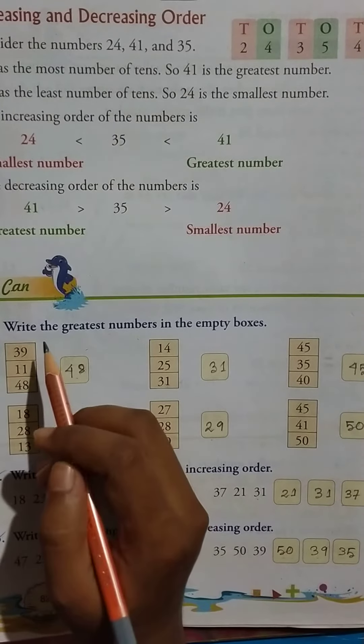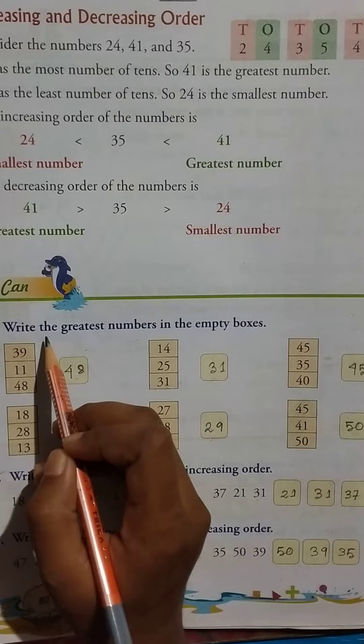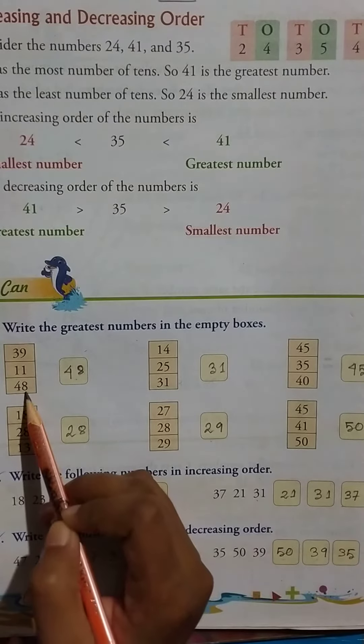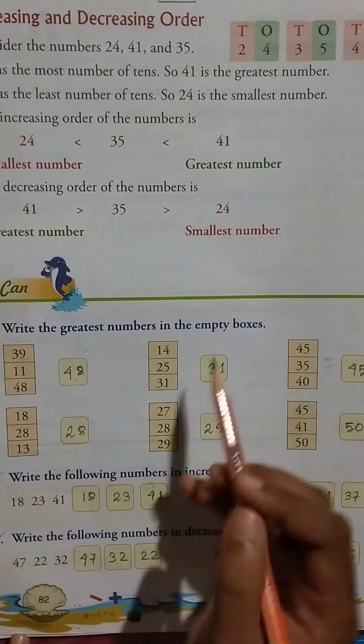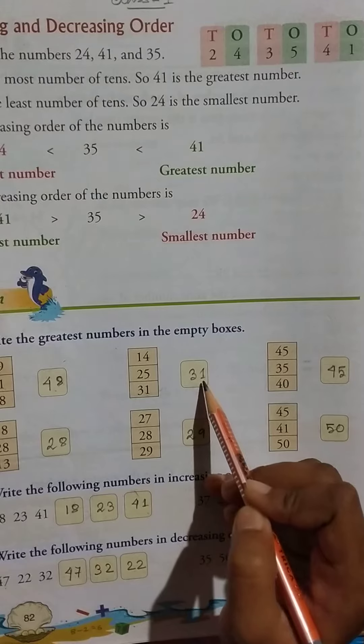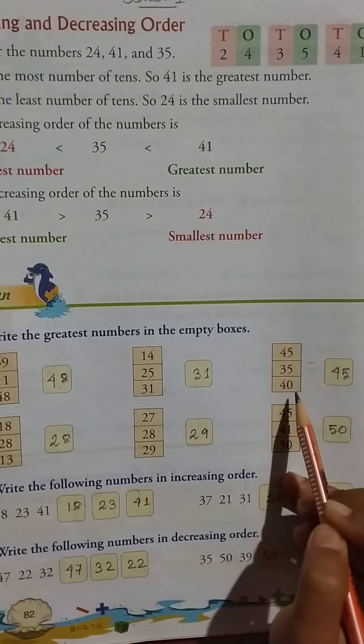Increasing and decreasing order. Write the greatest numbers in the empty boxes. Here 13 and 11 and 48, so here greatest number is 48. Then 14, 25, and 31, here 31. Then 45, 35, and 40, so...